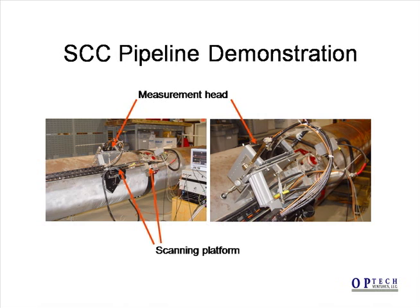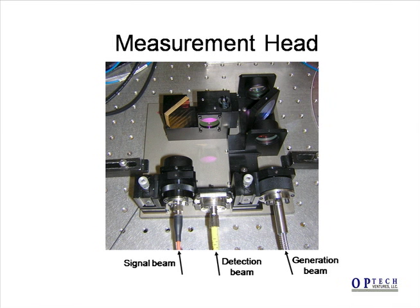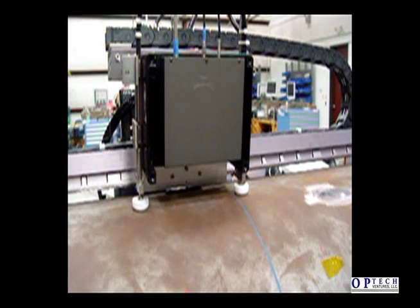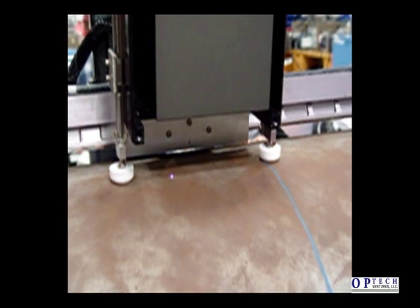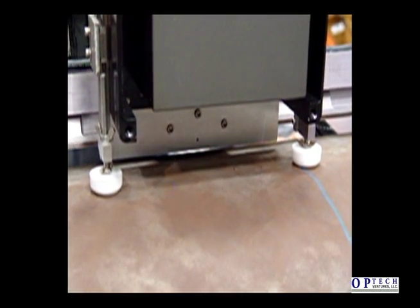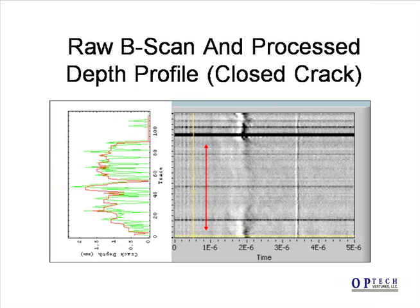We participated in an industry demonstration of a scanning laser ultrasonic system in Houston, Texas. A measurement head was mounted in a motorized platform that could be scanned axially and circumferentially. Since the cracks are mostly axial, this was the common scan direction. Our measurement head was only about 7 inches on a side and was fully fiberized. In this video, we see our head scanning a single crack. The detection beam is at a wavelength of 1550 nm and so it is not visible in the video. We show a raw B-scan of one of the scanned cracks along with the crack profile as provided by our signal processing algorithm.